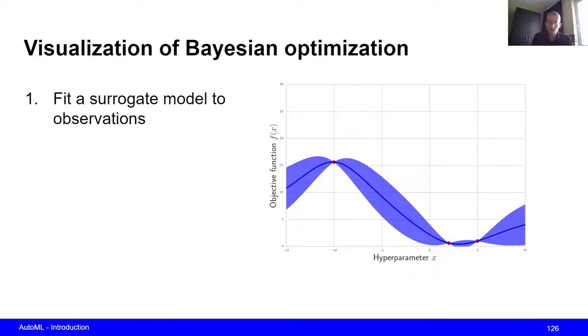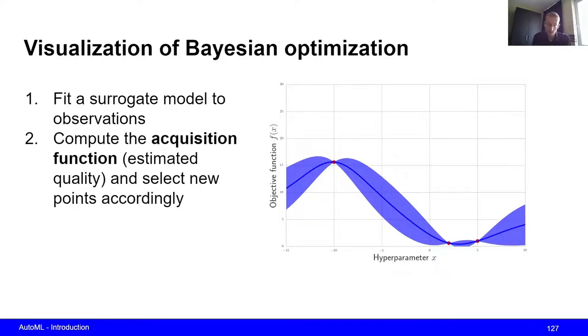All right, now once we have the surrogate model, we can now actually compute an acquisition function, which tells us how promising different areas of this hyperparameter space are. And once we have computed this, we can actually select new points accordingly.